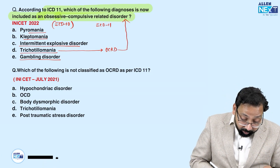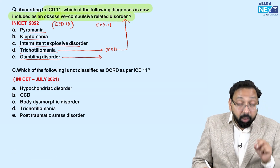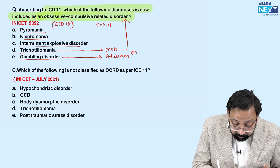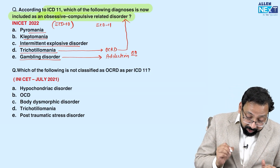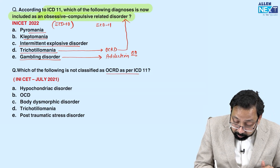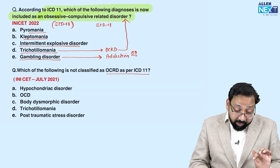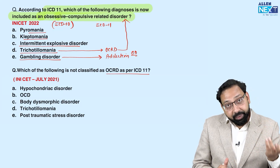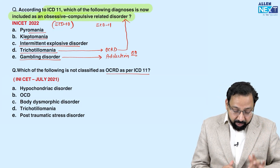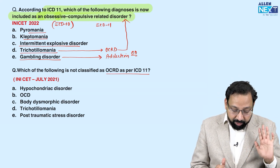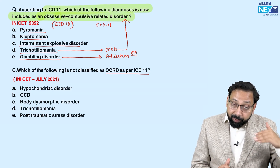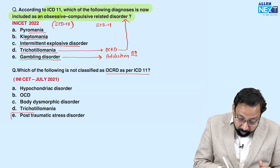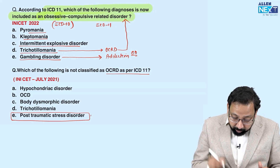Another potential question: gambling disorder is no longer an impulse control disorder — it is now under addiction. The second recently asked question: 'Which of the following is not classified as OCRD as per ICD-11?' Hypochondriasis is now OCRD; OCD and body dysmorphic disorder are OCRD; trichotillomania moved from impulse control to OCRD. PTSD is not included in OCRD — that is the answer.